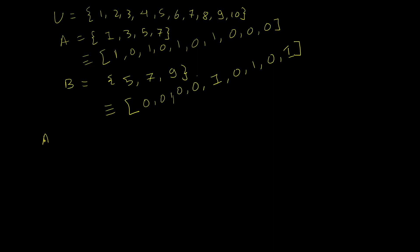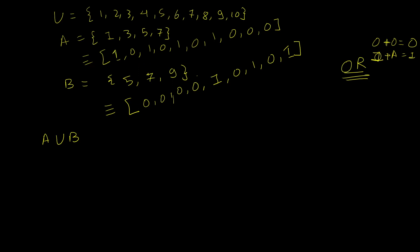Now how does this help with set operations? For A union B, instead of searching through elements, all I need to do is take a bitwise OR of the two bit arrays. An OR ensures at least one input is a 1: 0 OR 0 = 0, but 1 OR anything = 1. So I can simply do a bitwise OR to get the union.